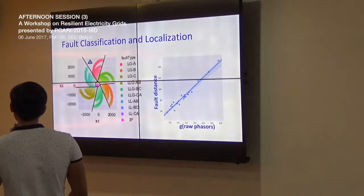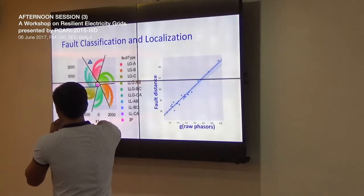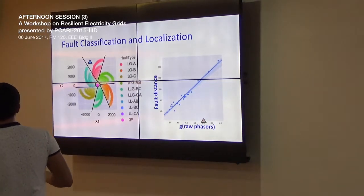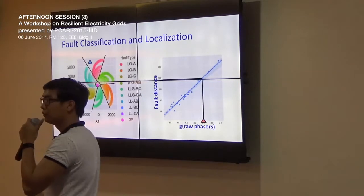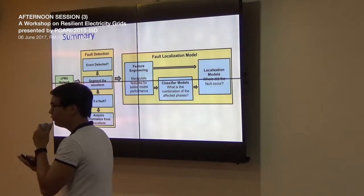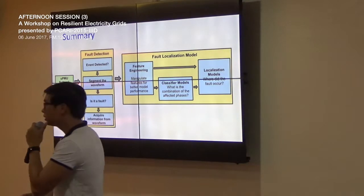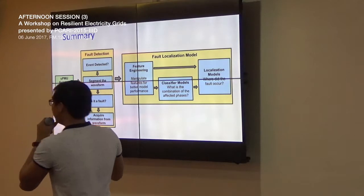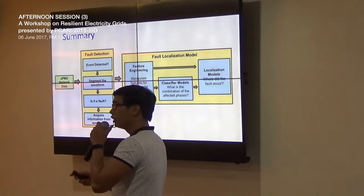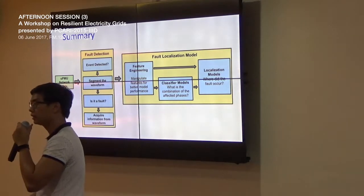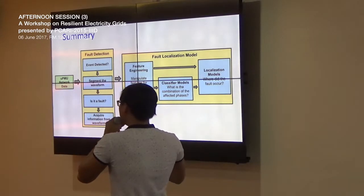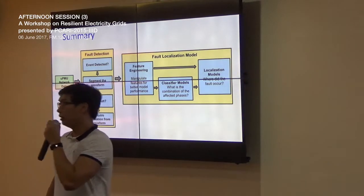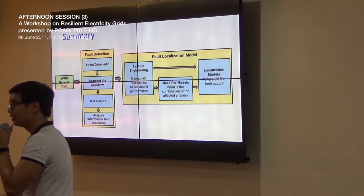For fault localization, given a certain fault feature-engineered variable on the x-axis, we can map a new instance and determine the fault distance. That is the main idea of my full fault localization process: from micro-PMU network data, we detect an event or anomaly, segment the waveform, determine if it is a fault, acquire the significant information, feed it to the fault localization block, do feature engineering to manipulate raw features into more meaningful data, and then feed them to the classifier and localization models.